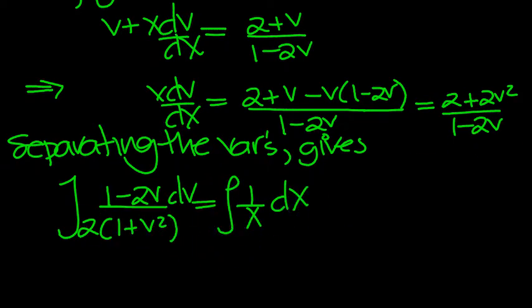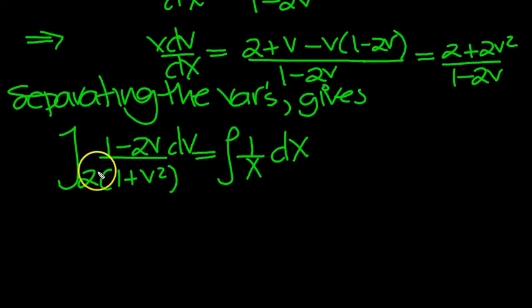So this 2 is underneath the whole fraction here. So we can just put that outside that integral for now and worry about what's inside. We've got 1 minus 2v over 1 plus v squared. Well, that will be 1 over 1 plus v squared.